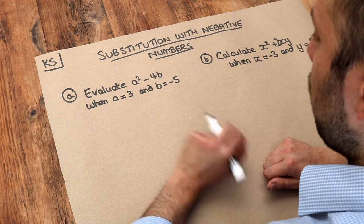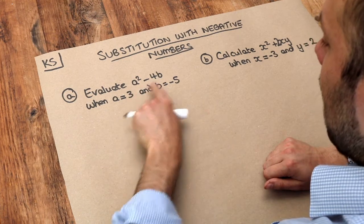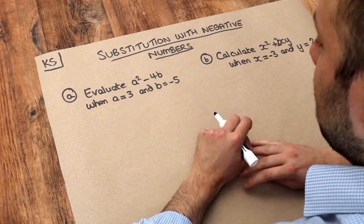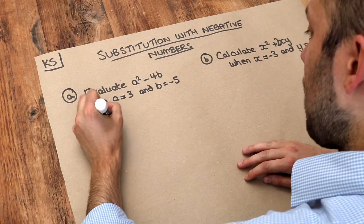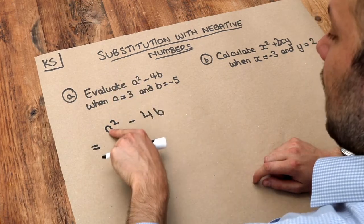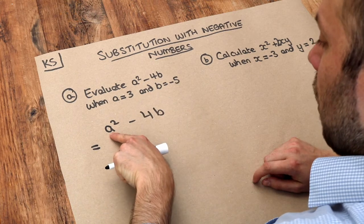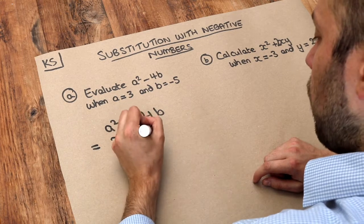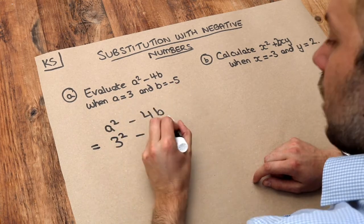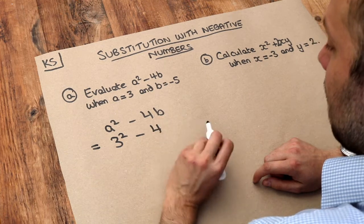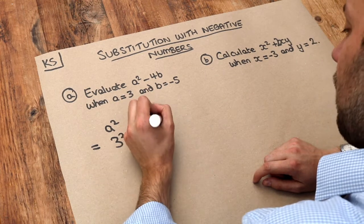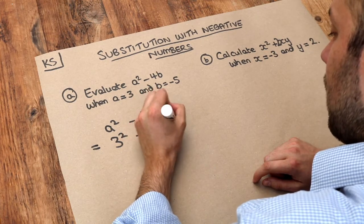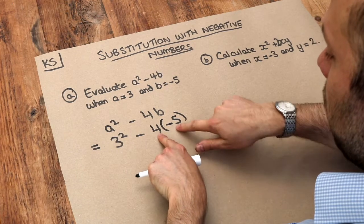We do exactly the same as before — we just take each of the values for A and B and replace each of the letters in the expression with those numbers. So for example, A squared minus 4B: if we replace each variable with its value, A is replaced with 3, giving 3 squared minus, and then 4 times B which is minus 5. Don't just write minus 5 here because that looks like a subtraction — it's 4 times minus 5. I prefer to use brackets: putting them next to each other means 4 times minus 5.